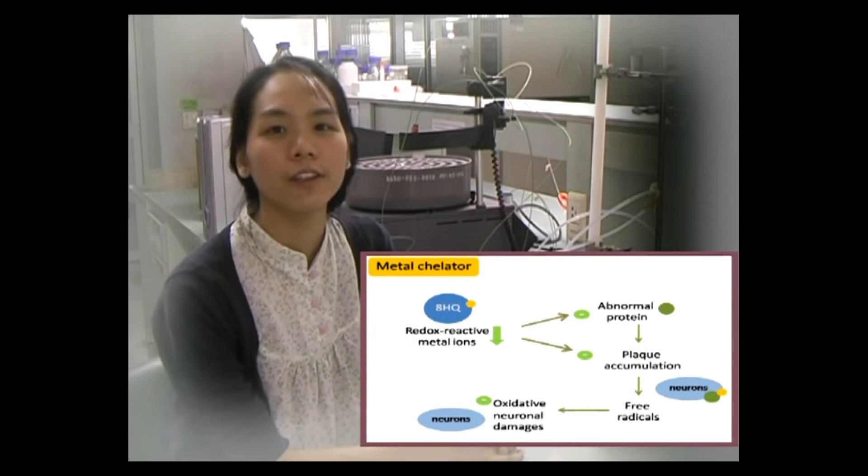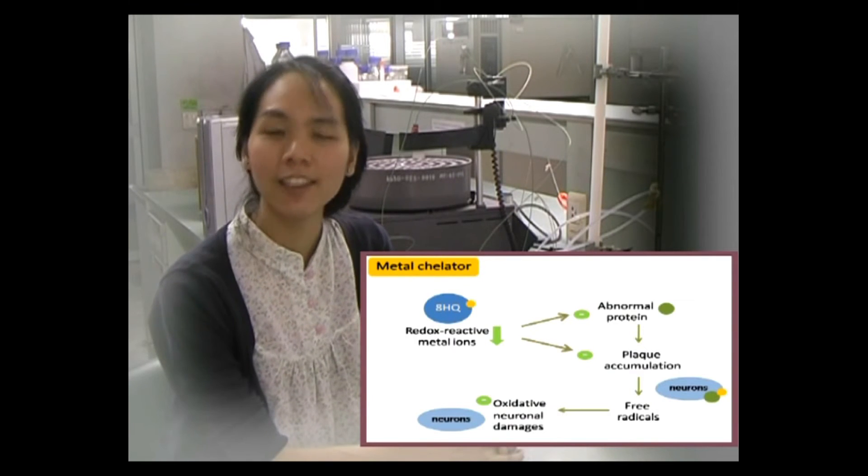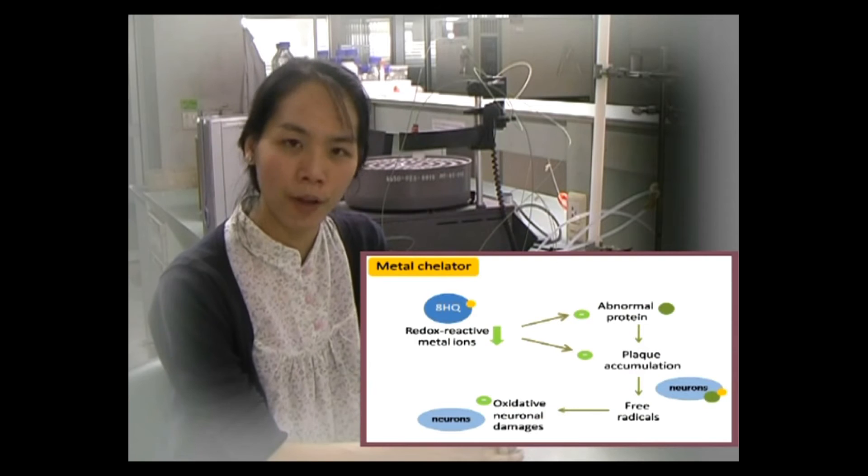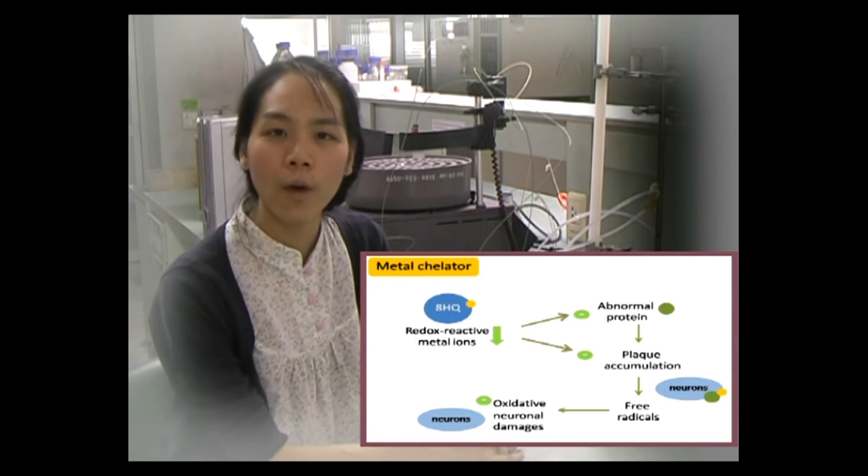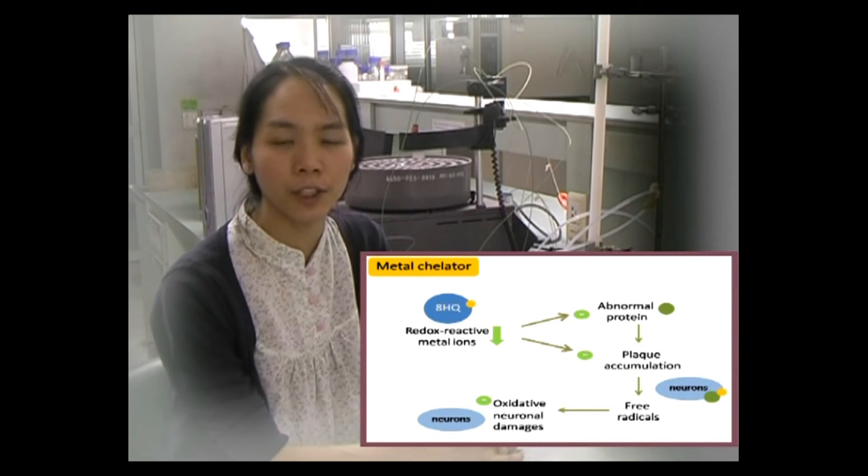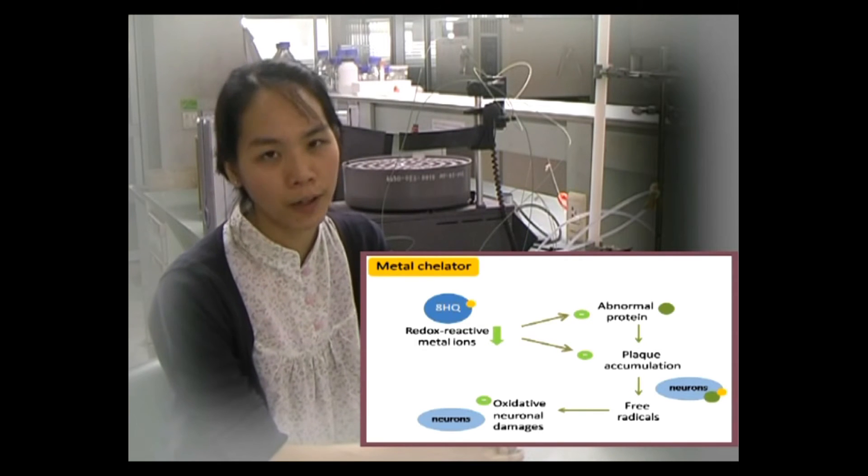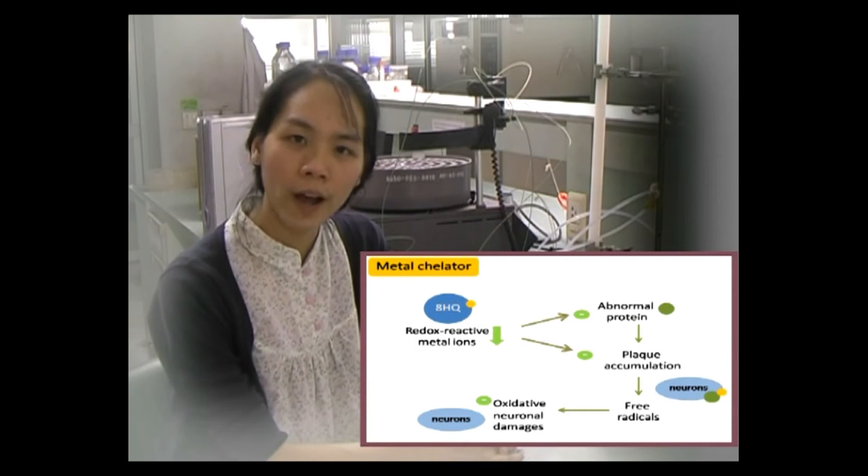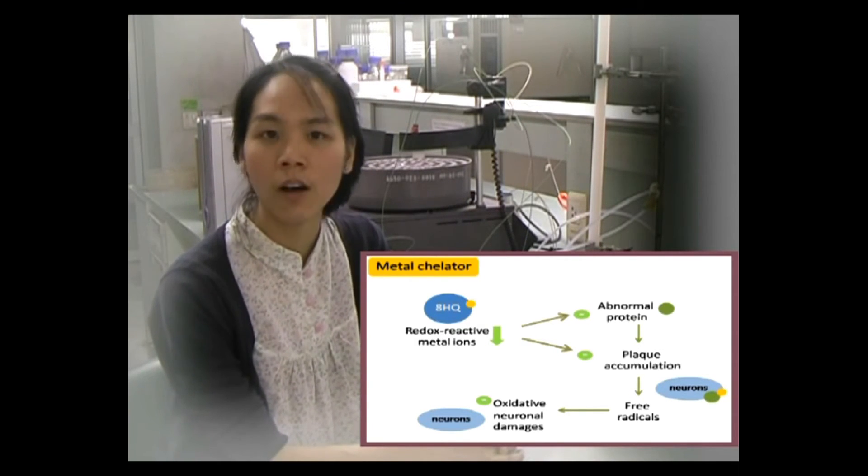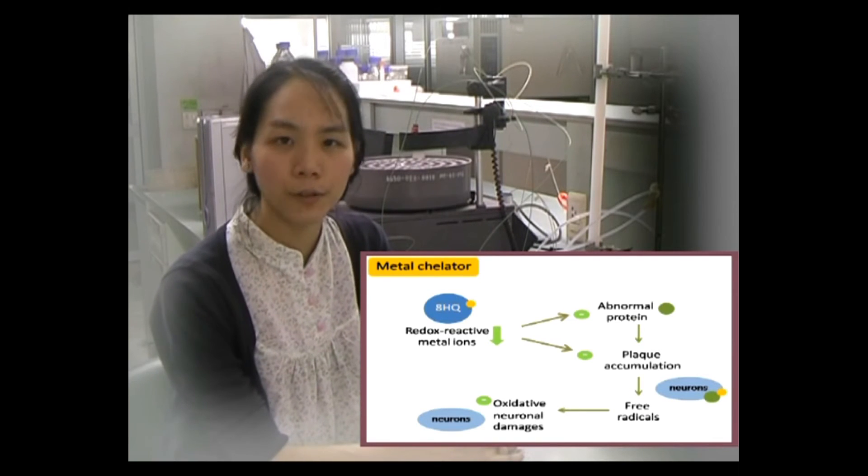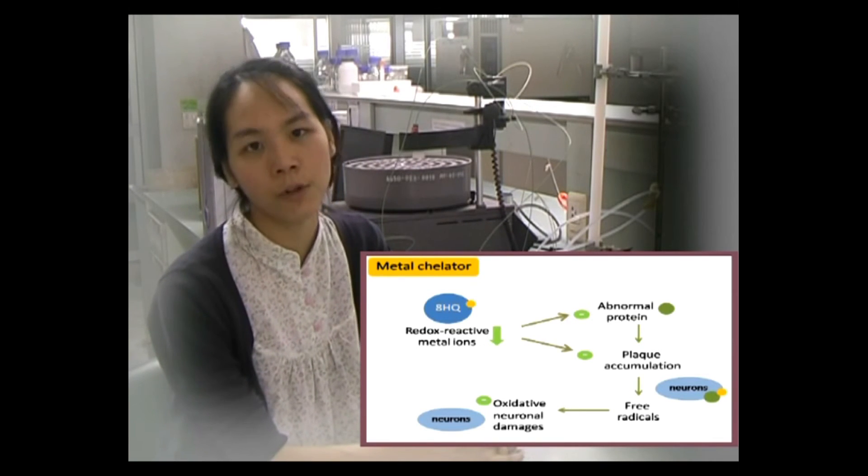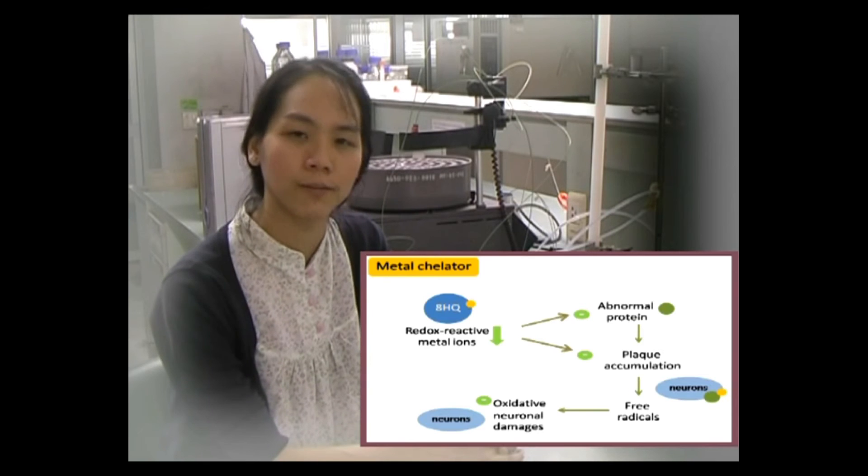As a highly lipophilic potent metal chelator, A-Hydroxyquinolene can pass through blood-brain barrier into the brain where it can chelate the excessive metal ions, thereby prevent the production and accumulation of abnormal proteins as well as protect the neurons from oxidative damages.